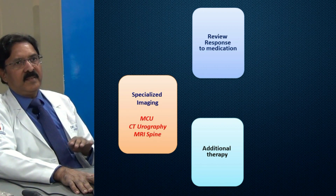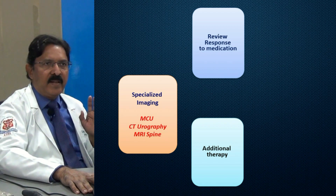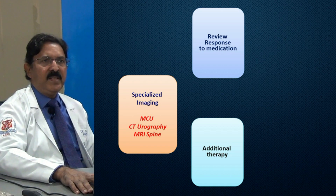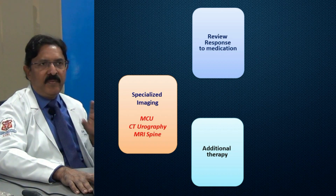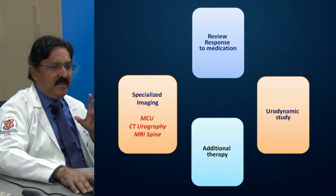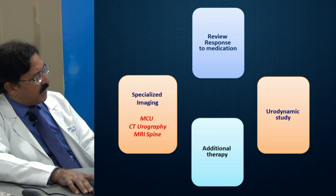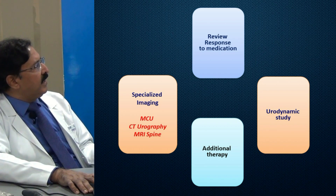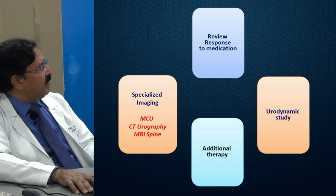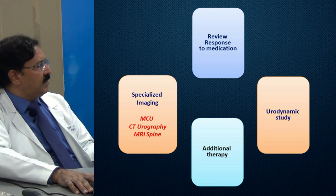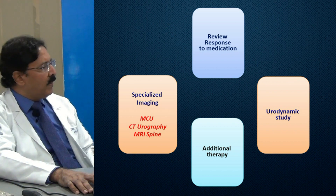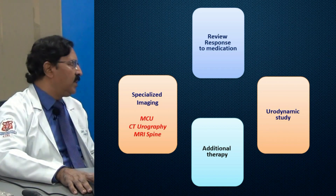If you suspect spinal disease in the patient, ask for an MRI spine or brain. So this is specialized imaging — don't hesitate in doing this at this point because your patient is not responding. And then there is the urodynamic study. If you think the patient has the urgency component that is not settling with treatment, you have to document whether it is really a genuinely urodynamically proven detrusor instability or not. So at this stage, I would like to do these tests.